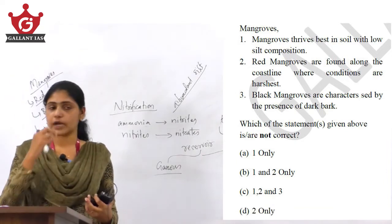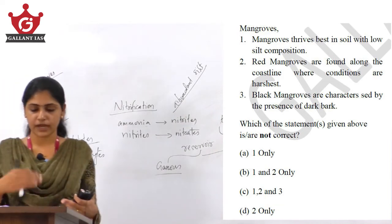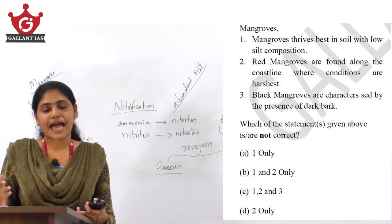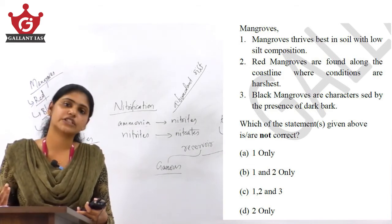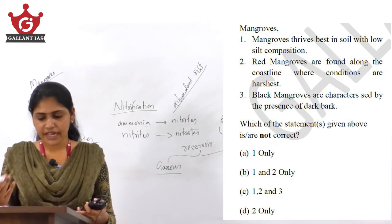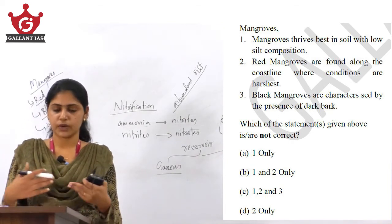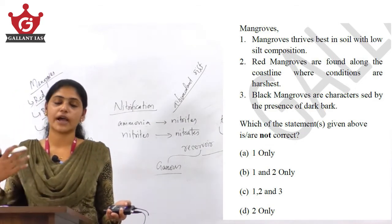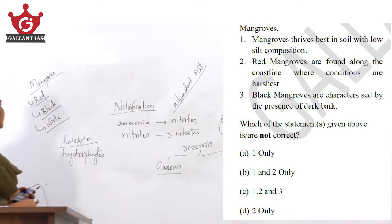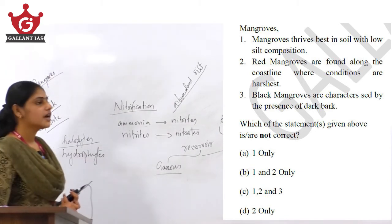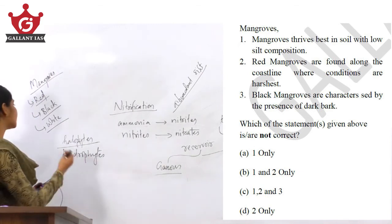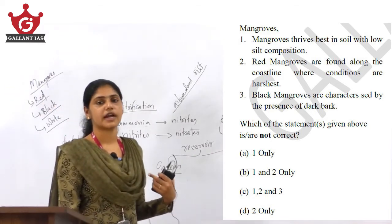Red mangroves are found along the shores or coastlines and are well adapted to live in harsh conditions. Black mangroves have a predominant characteristic feature — their bark is very dark in color, which is why they are called black mangroves. White mangroves, compared to red and black, can grow at the highest elevation.